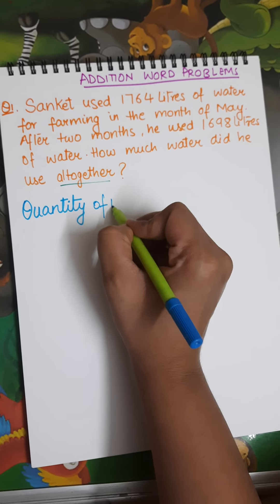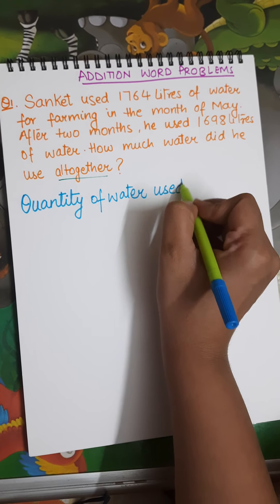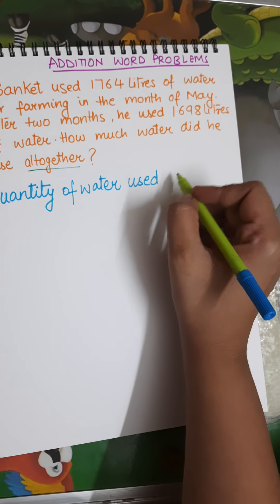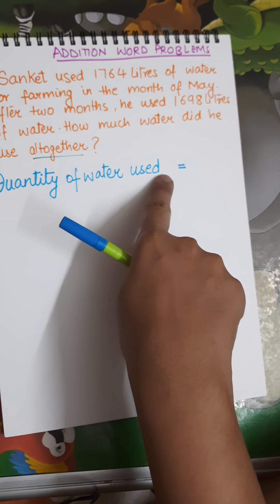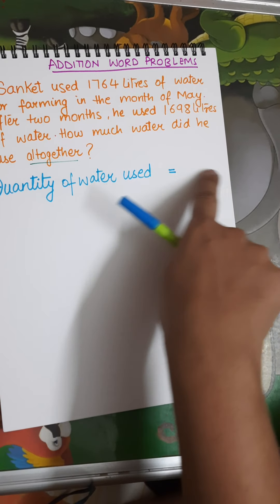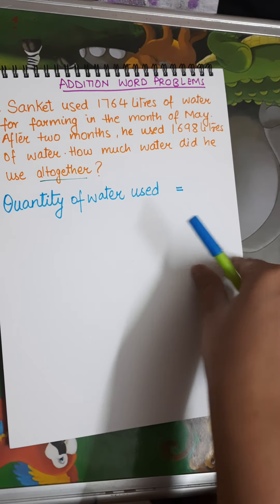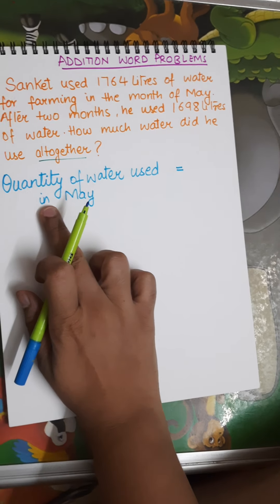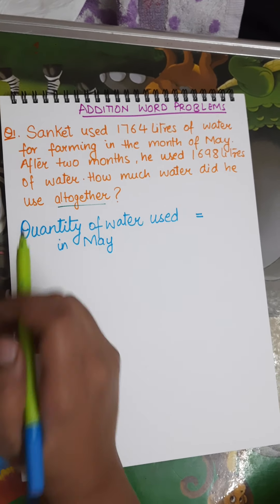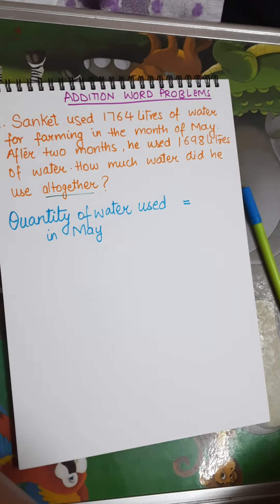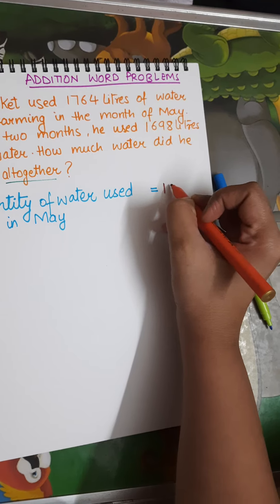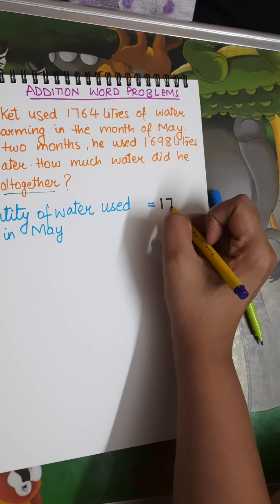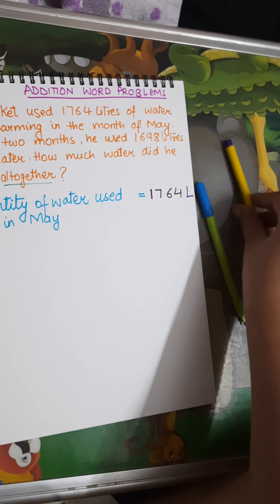So the first statement is: quantity of water used in May. Please look carefully — I have left space to write down the numbers, so if the statement is incomplete on one line, I move to the next line, because that space is reserved for numbers. Quantity of water used in May = 1764 litres.